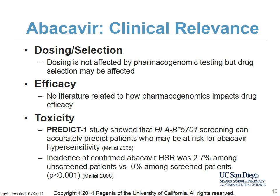HLA-B*5701 is detected using standard HLA typing. Sequence-based genotyping is considered the gold standard, and PCR using sequence-specific primers is the most widely used technique. Two cost-effectiveness studies showed that HLA-B*5701 screening was cost-effective among Caucasians, but less so in ethnic groups with lower prevalence. Dosing is not affected by pharmacogenomic testing, but drug selection may be affected. There is currently no literature related to how pharmacogenomics impacts abacavir efficacy.